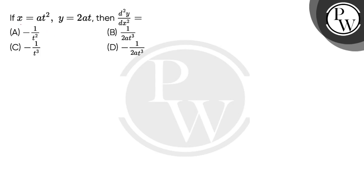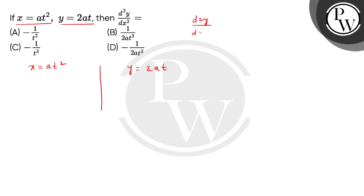Hello boys, let's read the question. If x equals to at square, y equals to 2at, then d square y divided by dx square equals to — so boys, given है हमें यहां parametric function type, x equals to at square and y की value given है t के form में 2at. So boys, हमें find करना है यहां second order derivative of y with respect to x.